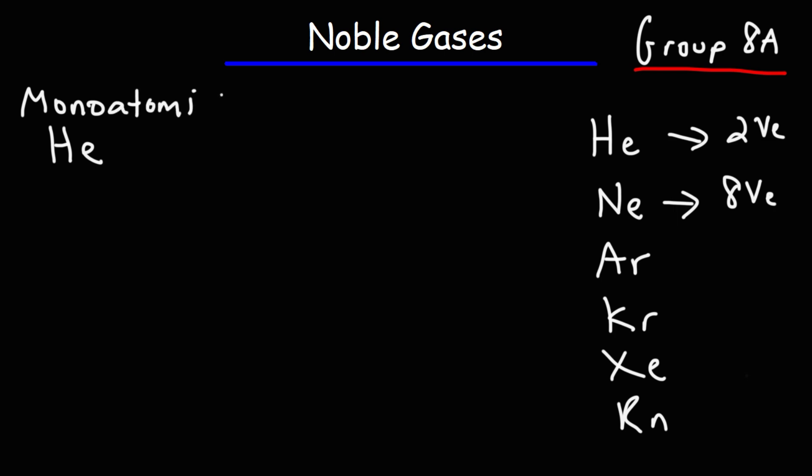The halogens, for instance, they are diatomic. So elements like fluorine, chlorine, bromine, iodine. All of these halogens, they're diatomic. They're molecules composed of two atoms. Whereas the noble gases, they're monoatomic. They're composed of just atoms instead of molecules.